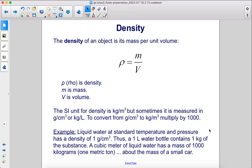For example, liquid water at standard temperature and pressure has a density of one gram per cubic centimeter. Thus, a one liter water bottle contains one kilogram of the substance. A cubic meter of liquid water has a mass of a thousand kilograms, which is one metric ton, about the mass of a small car.